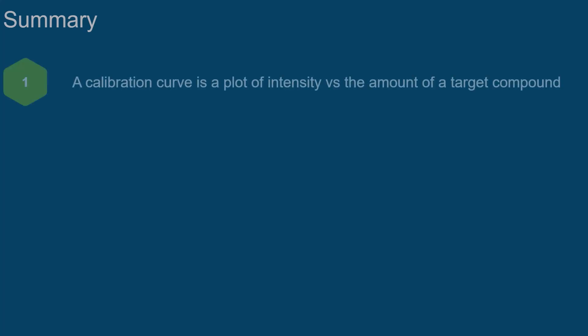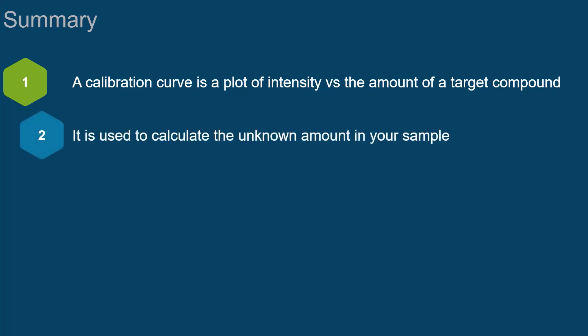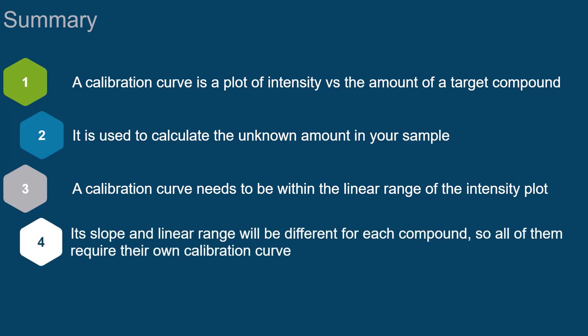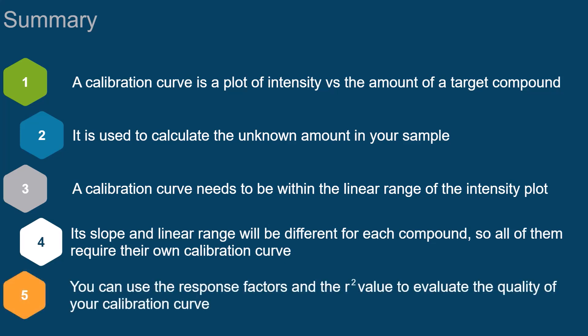In summary, a calibration curve is a plot of intensity versus the amount of a target compound, and you use it to calculate the amount in unknown samples. It needs to be within the linear range of the intensity plot. Its slope and the linear range will be different for each compound, so all of them require their own calibration curve. You can use the response factors and the R-squared value to evaluate the quality of your calibration curve.